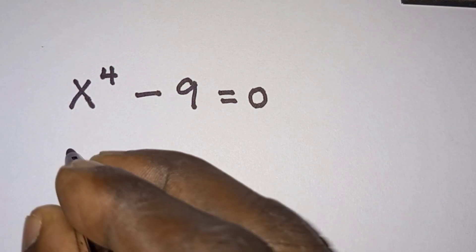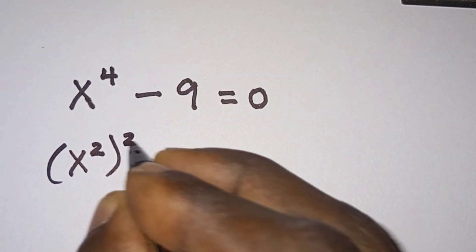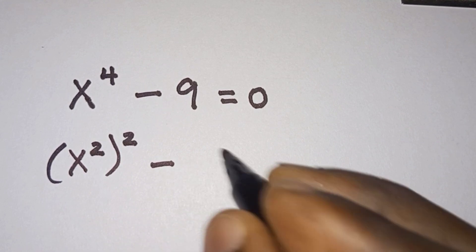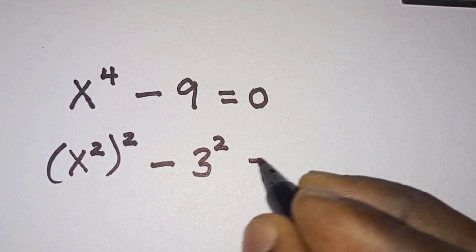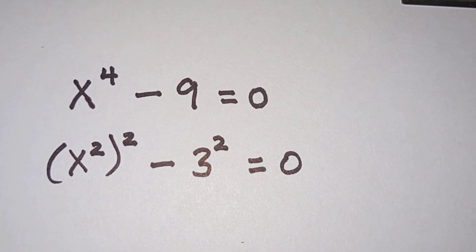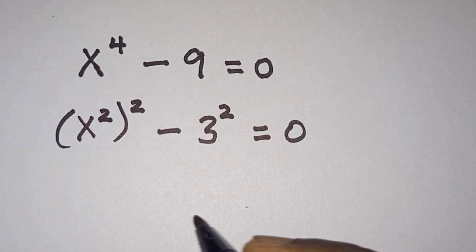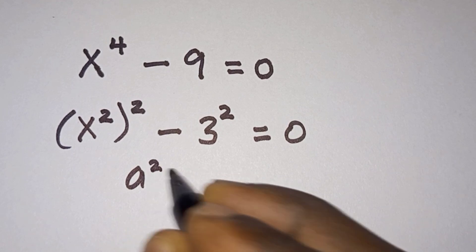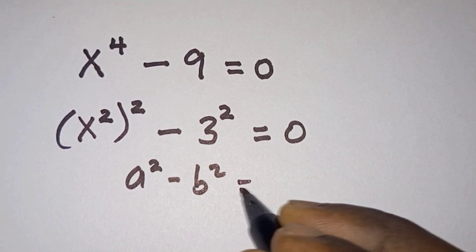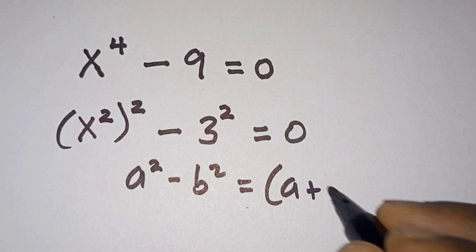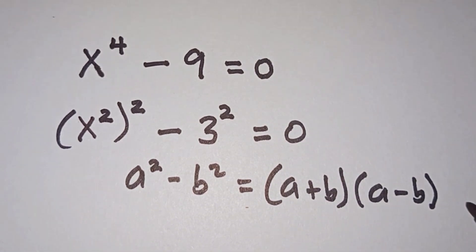x to the fourth power could be written as x squared to the second power, minus 9, which is also the same as 3 to the second power, and this is equal to 0. Now we see that this is a difference of two squares of the form a squared minus b squared equals a plus b times a minus b.